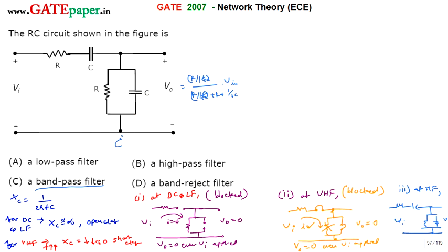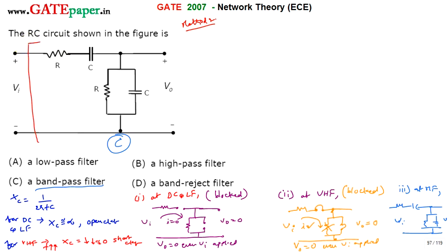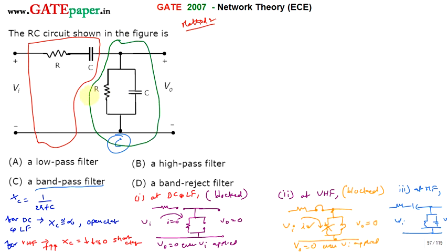So the correct option for this question is C — band pass filter. There is also a second method. In method 2, the circuit is divided into two blocks: a first block (network 1) and a second block (network 2), forming a cascade of two networks with an intermediate voltage Vx between them.